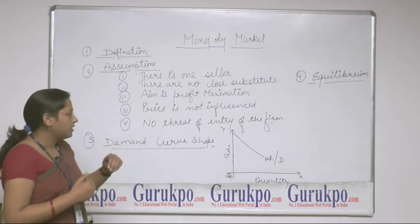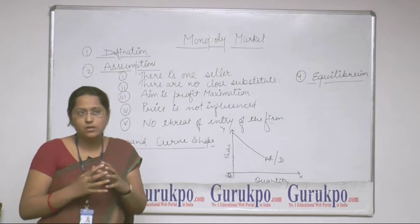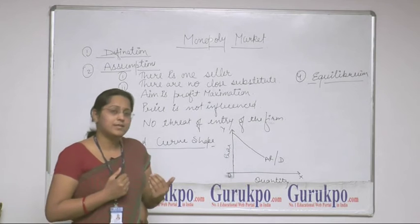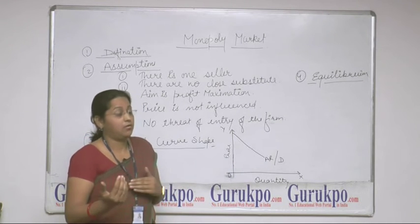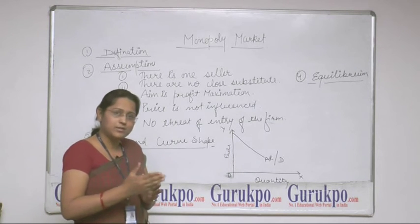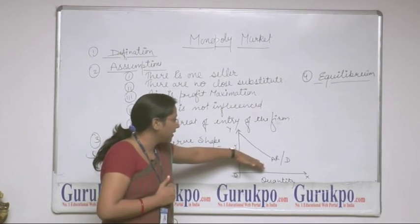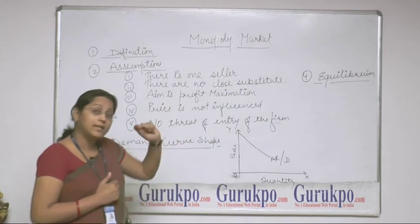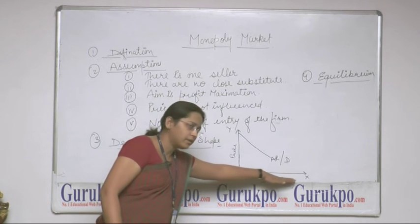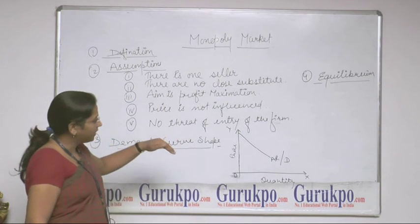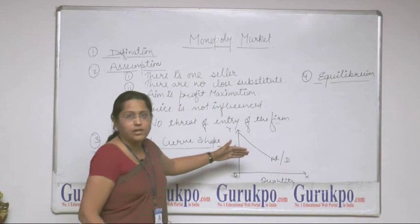Now we will look at the demand curve shape of the monopoly market. Since the monopoly is a price-maker firm, he has a hold on the price of that particular commodity. However, he cannot determine both price and quantity at the same time — either he can decide the price or he can go for a desired quantity. The shape of the demand curve is downward sloping, because if a monopoly firm wants to sell more quantity, he has to decrease his price level. No single buyer can influence its quantity or its price.